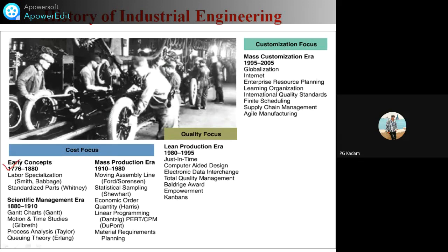The history of industrial engineering begins around 1776-1880 with labor specialization — those having skill in a particular product would do that production — as written by scientists Smith and Babbage. Next came standardized parts, followed by the scientific management era from 1880 to 1910, which introduced Gantt charts, motion-time studies, process analysis, and queuing theory by different scientists.